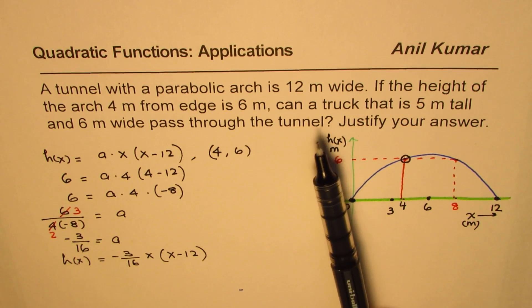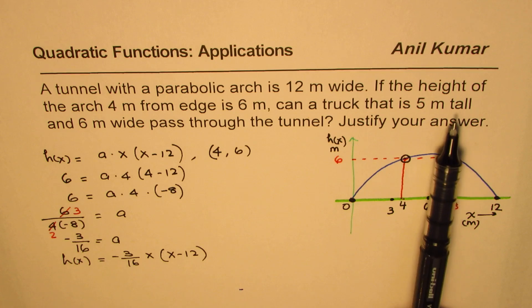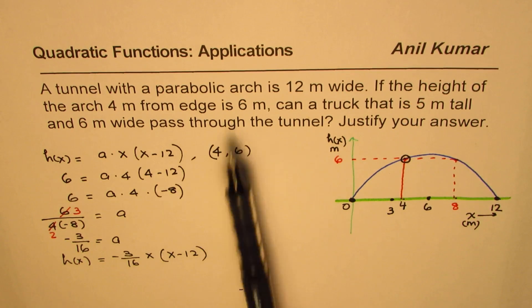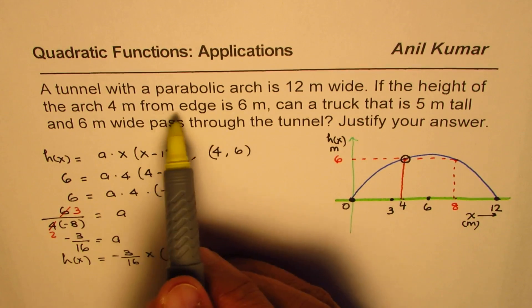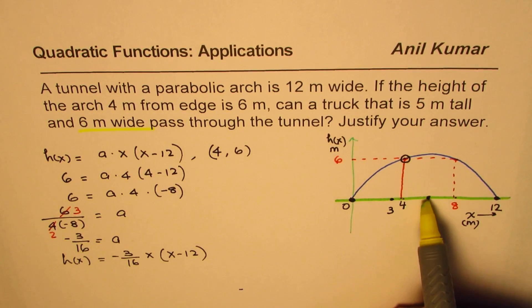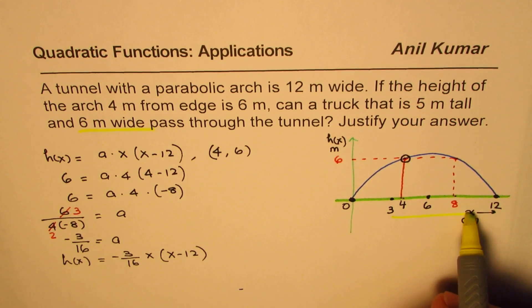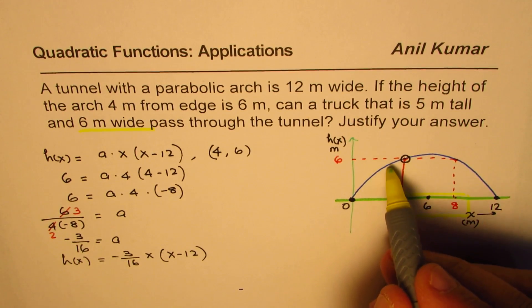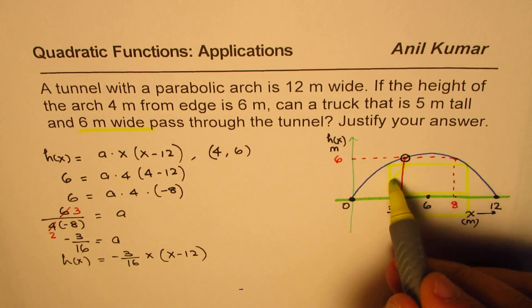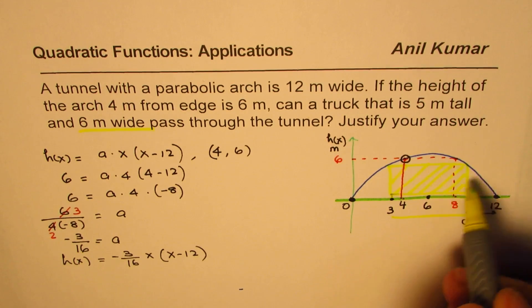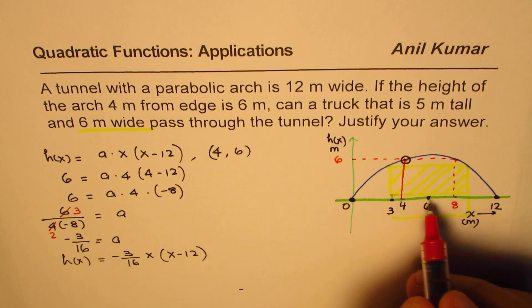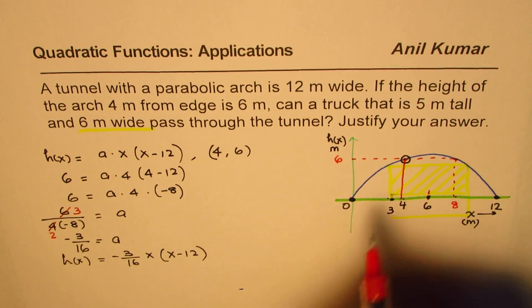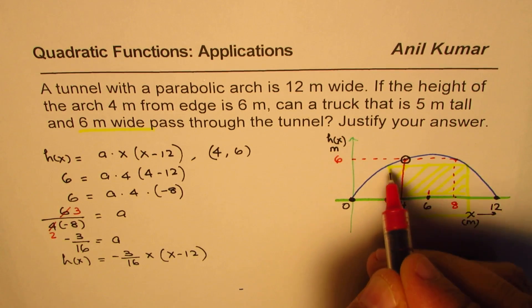Now the second part of this question is, can a truck that is 5 meters tall and 6 meters wide pass through the tunnel? So what we are going to assume here is that this truck, which is 6 meters wide, we will assume that it goes through the center. It cannot go from one side. So 6 meters means it has to be 3 on this side and 3 on the other side. So that is the kind of truck. So let's say this is the truck and the height of the truck is 5 meters. So that is the truck we are talking about.